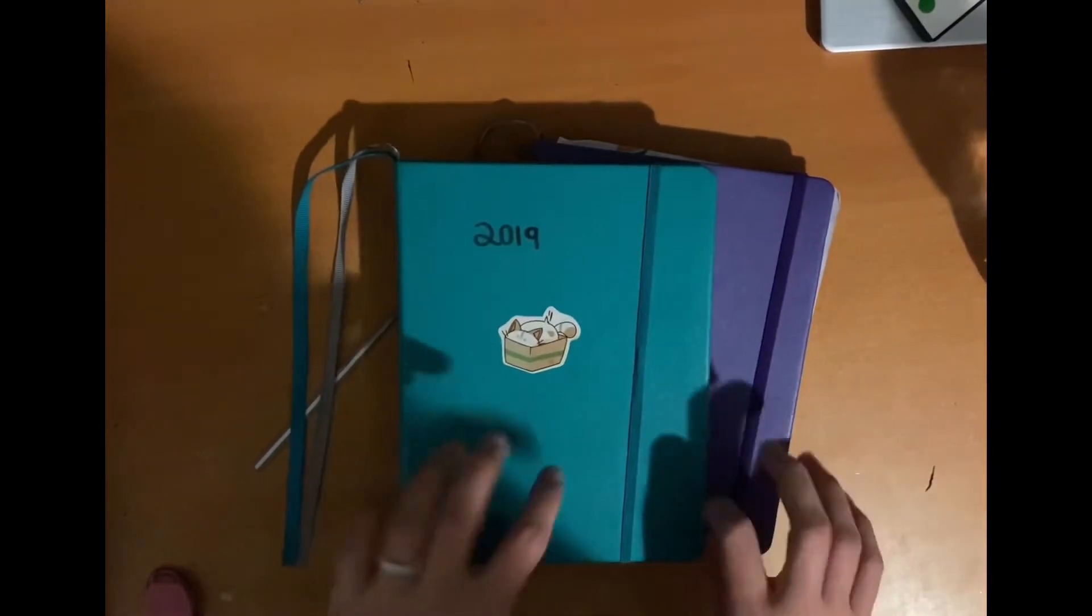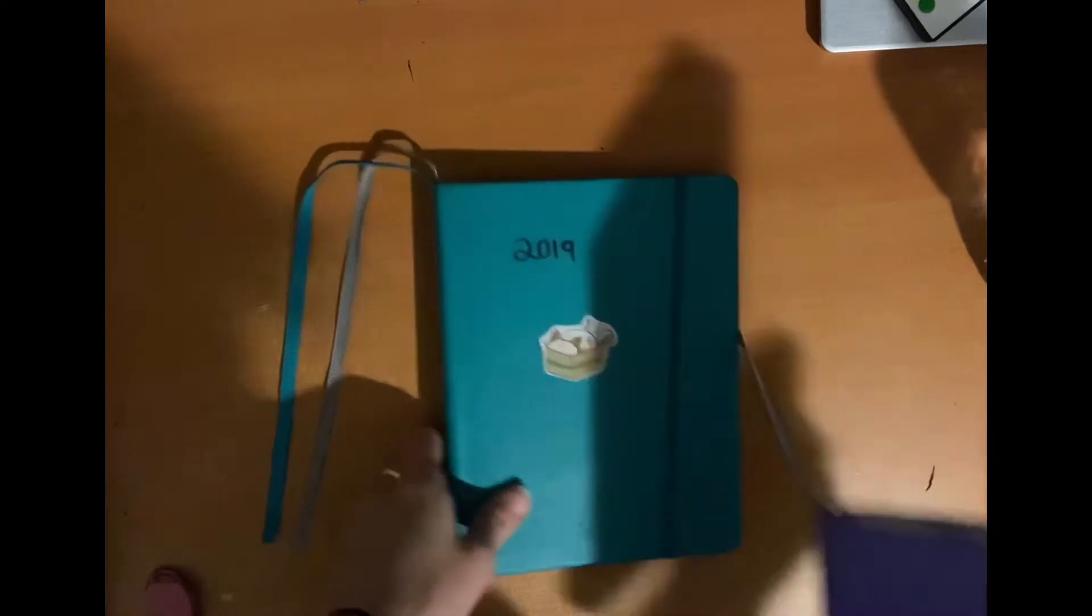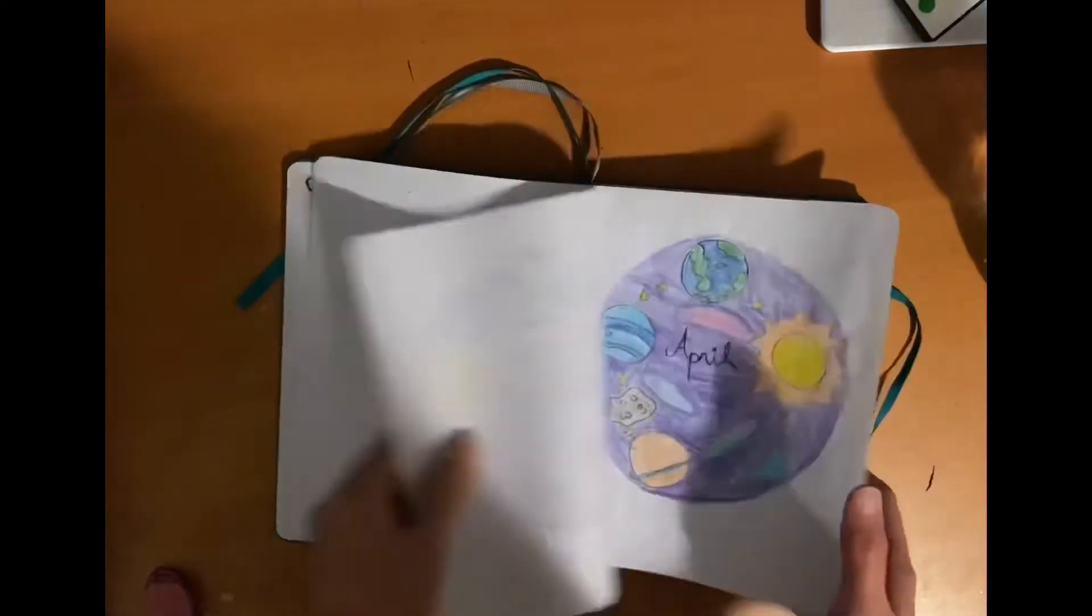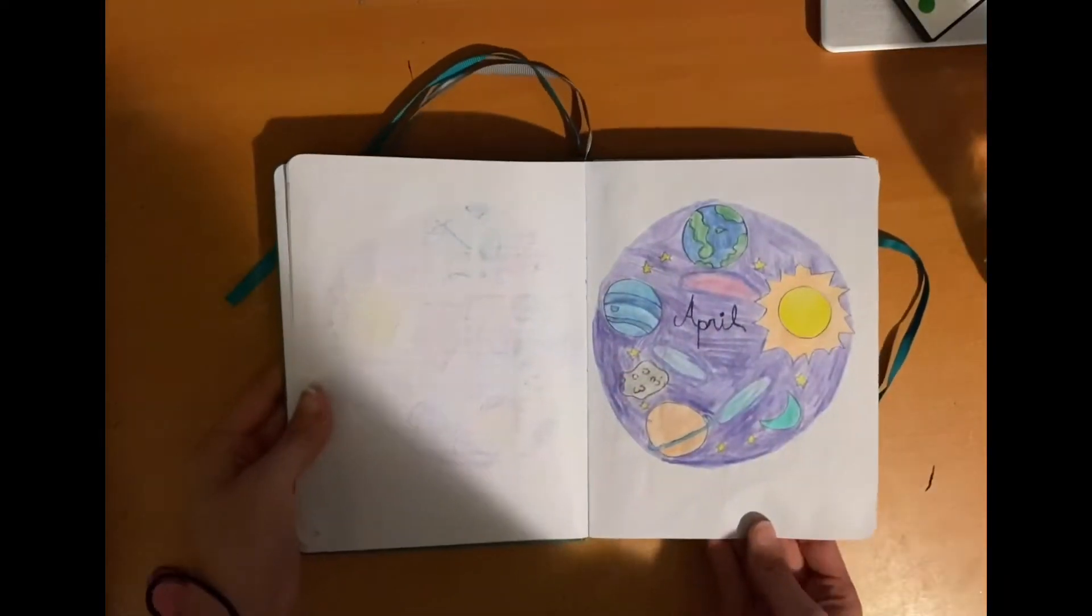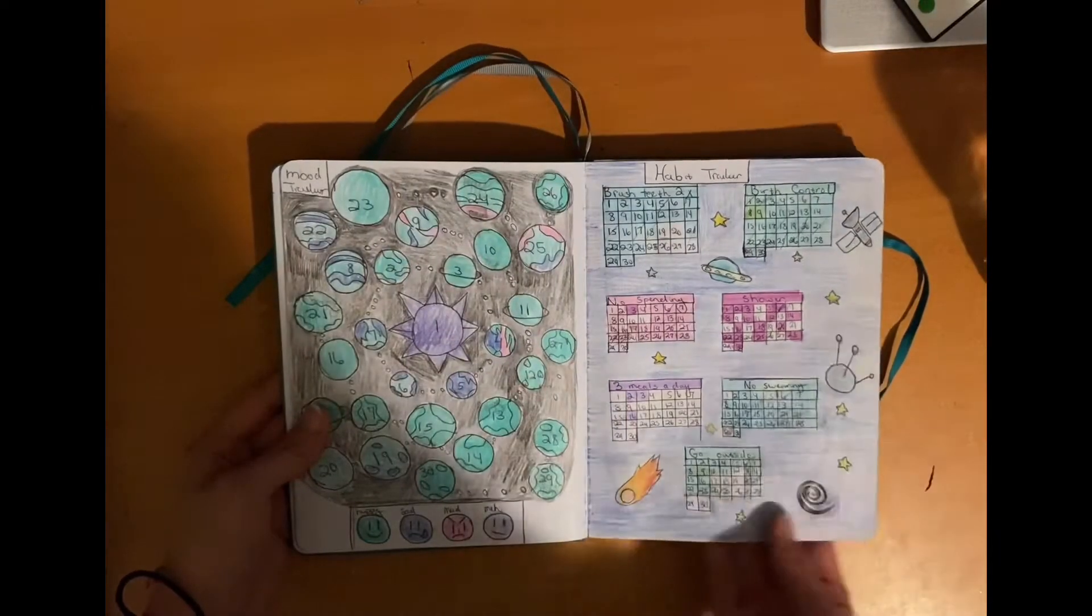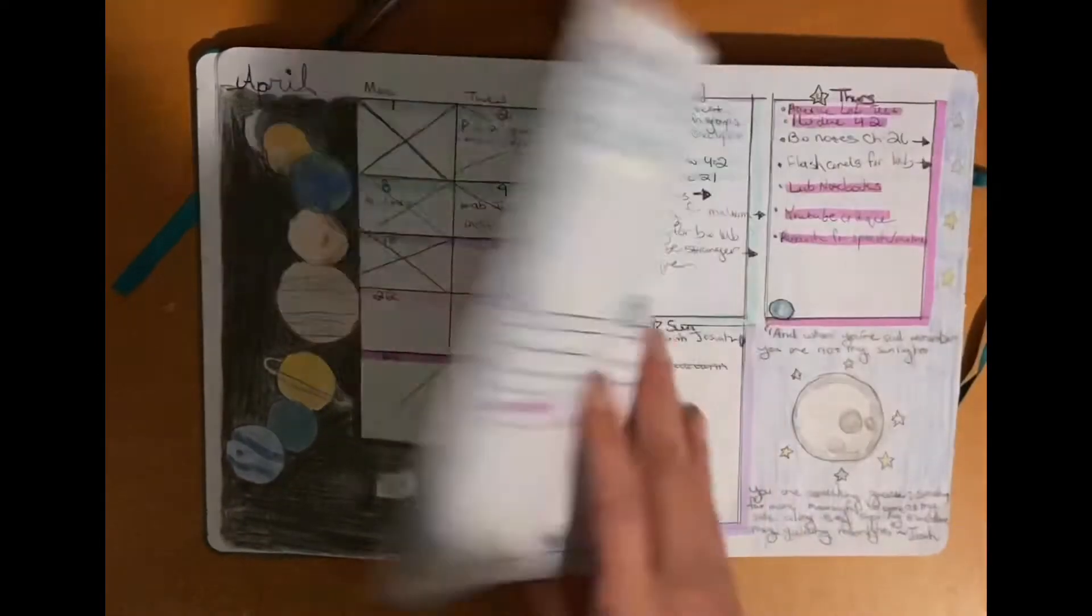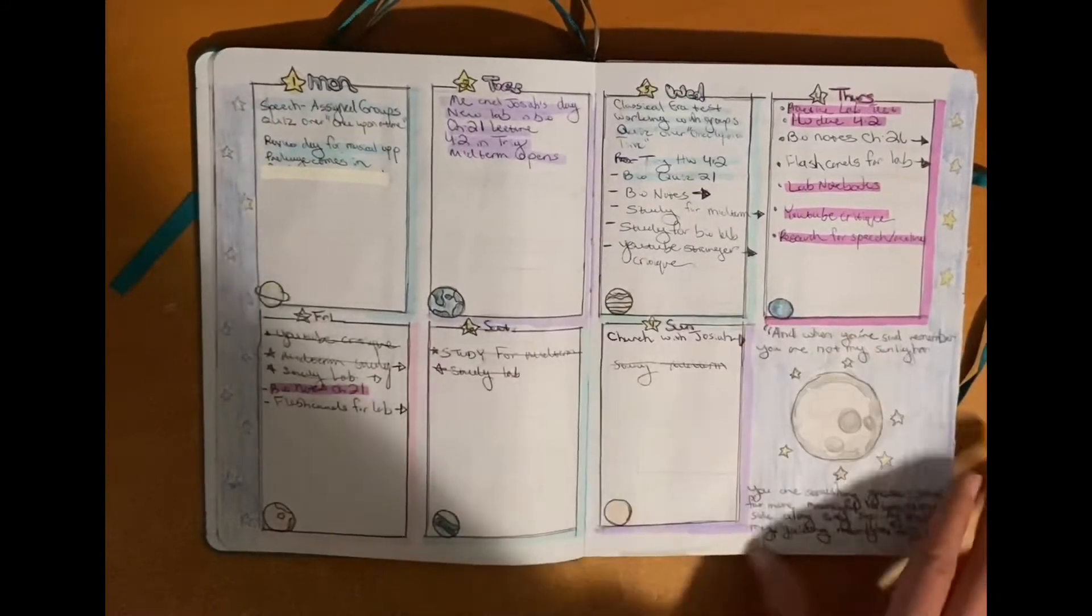Hey guys, what is up? This is the official flip through of my previous bullet journals. Starting in 2019, the very first year I started out, we have my very first theme ever which was this solar system theme that I decided to do in colored pencil.